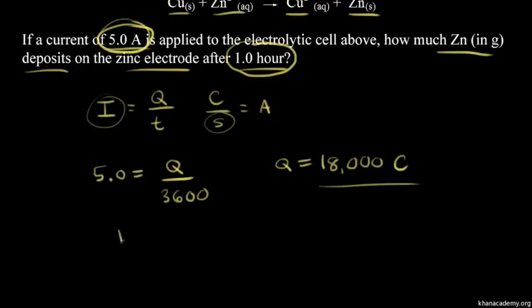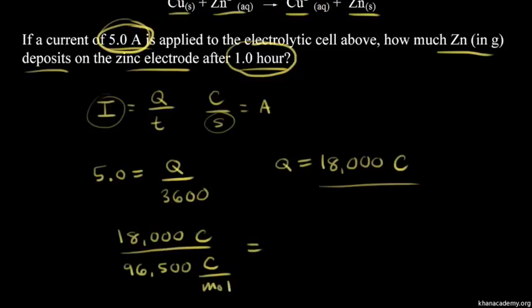So if we have 18,000 Coulombs, and we're trying to find how many moles of electrons that is, we would need to divide by Faraday's constant. So 18,000 divided by 96,500, which is Faraday's constant, the charge of one mole of electrons. If you do it this way, you can see that Coulombs would cancel out, and you would get moles of electrons. So this is equal to 0.19 moles of electrons.